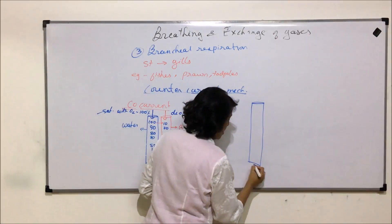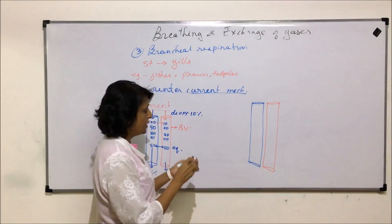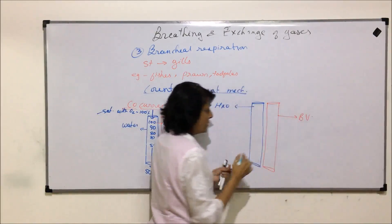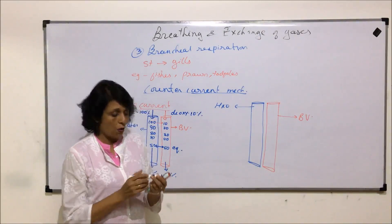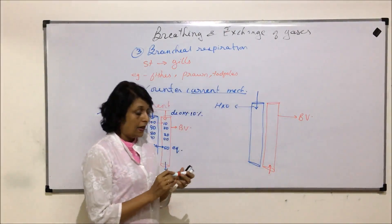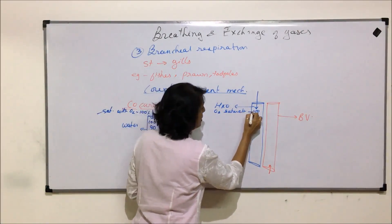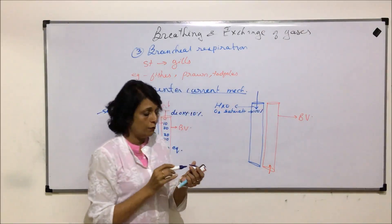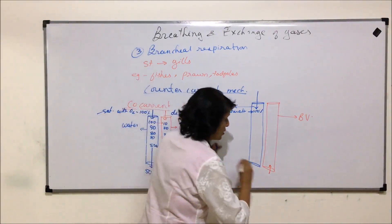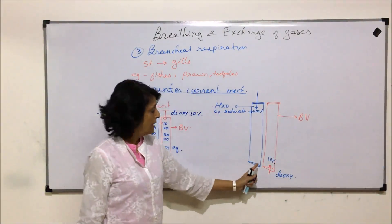We will take the same two liquids — water and blood — but here they flow in the opposite direction. The blue represents the flow of water and the red one for blood, which is the blood vessel. The two liquids flow in opposite directions. Water enters from one side while blood comes from the other. Oxygen saturation in the entering water is 100%. The gills are supplied with blood, and the blood entering here is de-oxygenated — it has only 10% oxygen content.